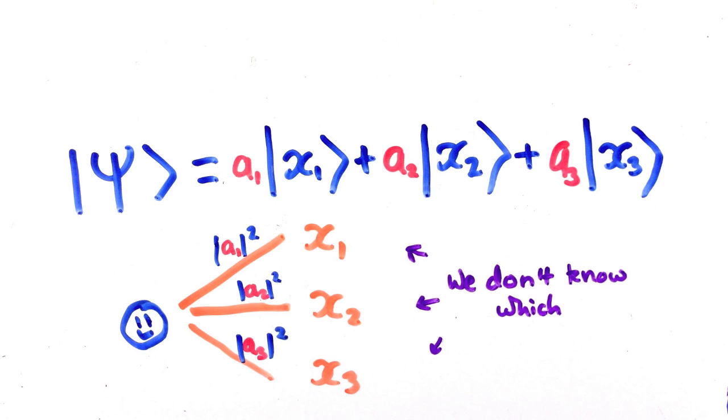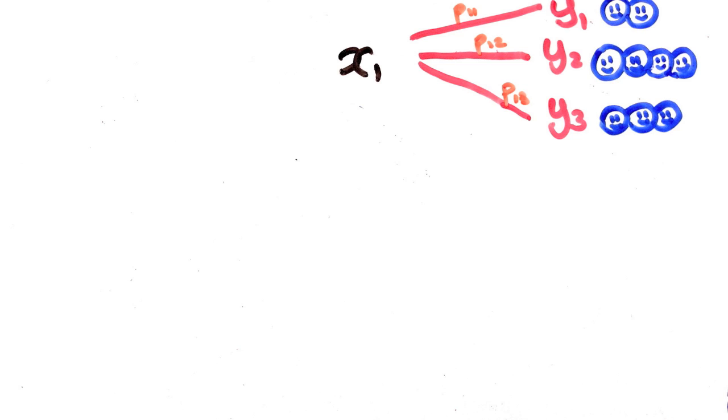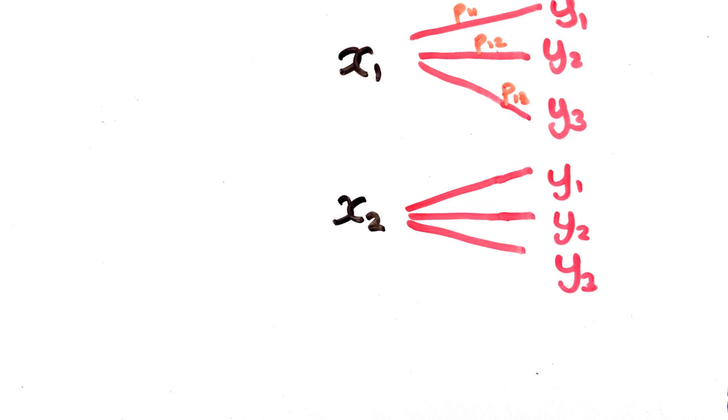We can tell because of this. If we had a particle that really was in state x1, or really a bunch of particles in that state and we measure y, we can find out the probability that we measure it in state y1 or y2, etc. Then we can do the same thing with particles in state x2, etc.